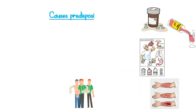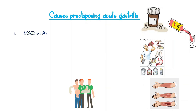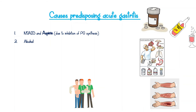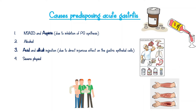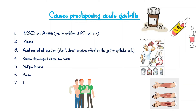Causes predisposing acute gastritis include NSAIDs and aspirin, due to inhibition of prostaglandin synthesis; alcohol, acid, and alkali ingestion, due to direct injurious effect on the gastric epithelial cell; and severe physiological stress like sepsis, multiple trauma, burns, and intracranial lesions.